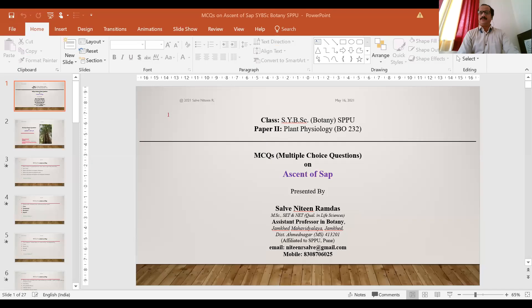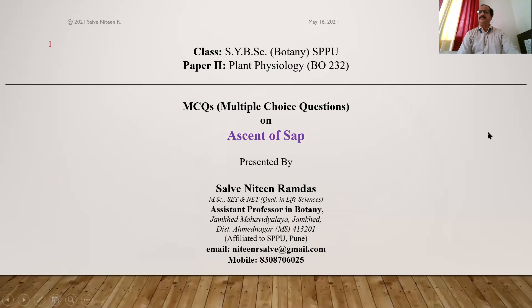Hello friends. Welcome back to this series on MCQs on plant physiology paper from Botany. Today's topic of discussion is ascent of sap — the physiological phenomenon defined as the upward movement of water from roots to the tip of the plant, against the force of gravity and against the friction caused by water in xylem vessels. Some MCQs are going to be tested; you can use them for self-evaluation.